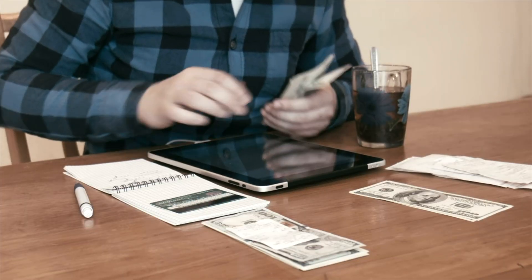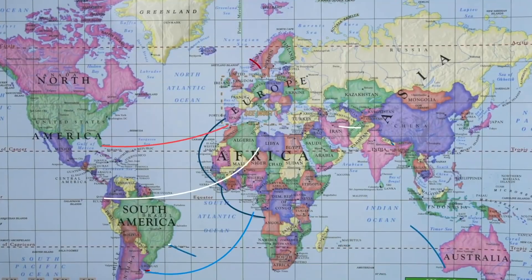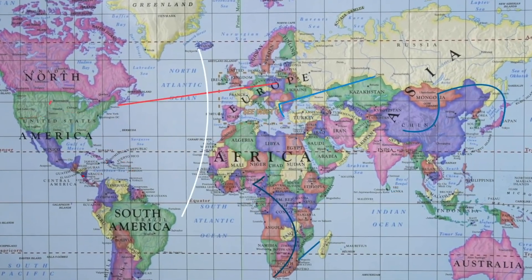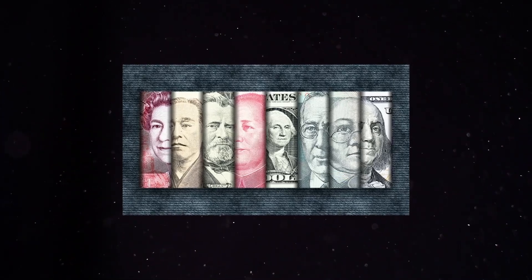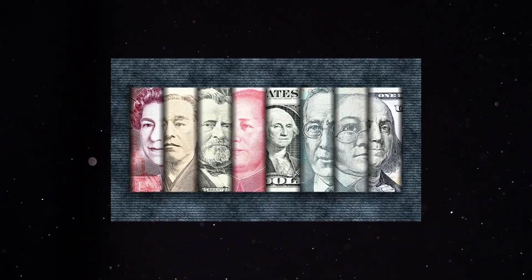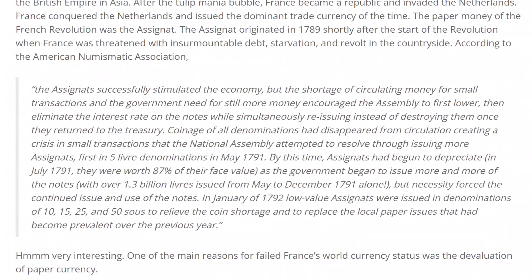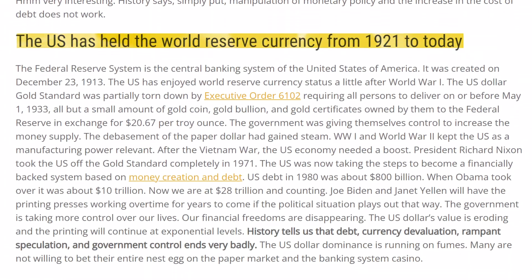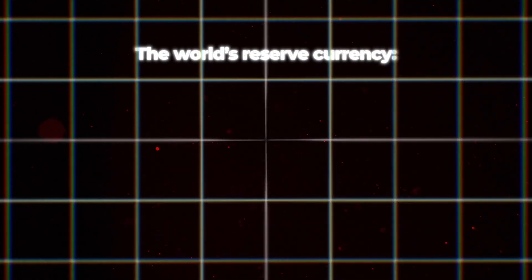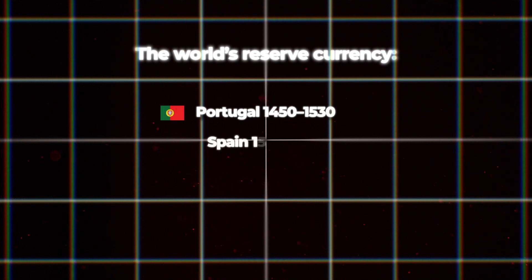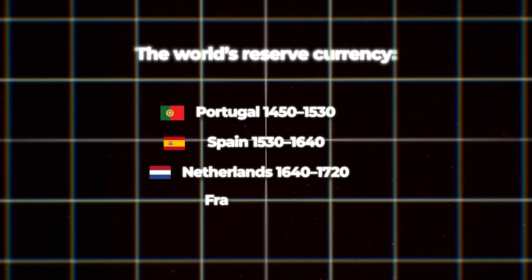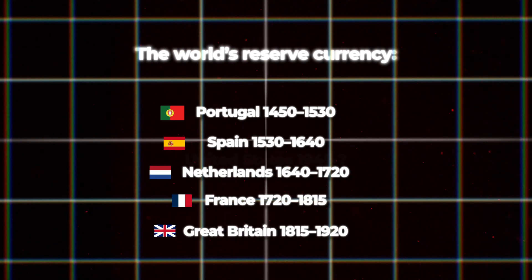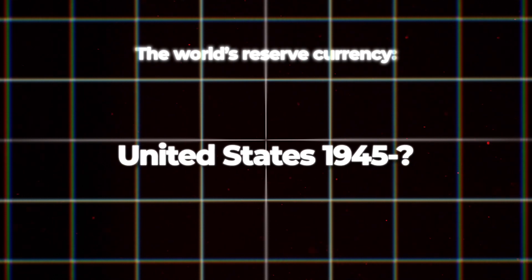Now to be clear, the US dollar hasn't always been the reserve currency. In fact, over the past six centuries — since the beginning of the era of global trade — there have been six different reserve currencies, each of them lasting about a hundred years. The US dollar has been the reserve currency for the past 80 to 100 years, depending on how you count it. Portugal held reserve status from 1450 to 1530, Spain from 1530 to 1640, the Netherlands from 1640 to 1720, France from 1720 to 1850, Great Britain from 1815 to 1920, and the United States from 1945 to — who knows.